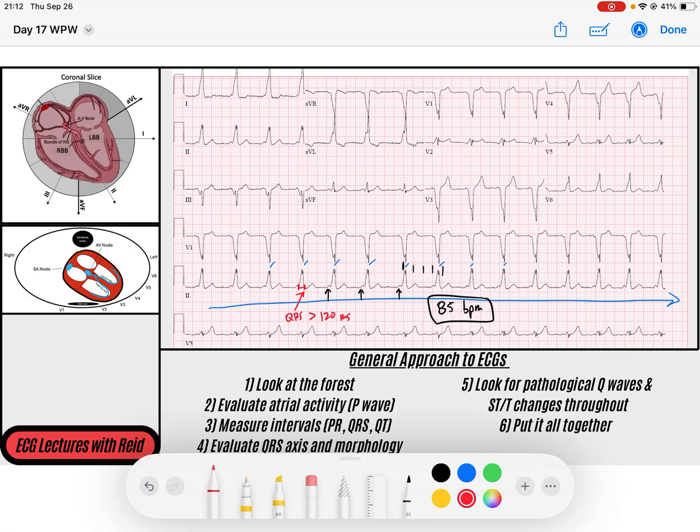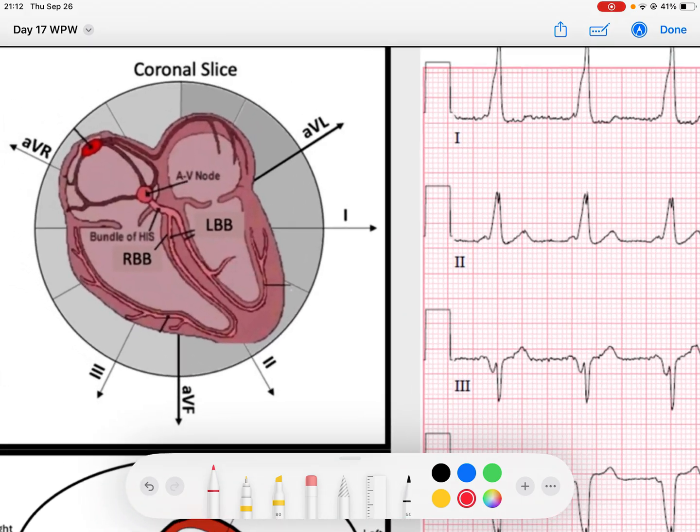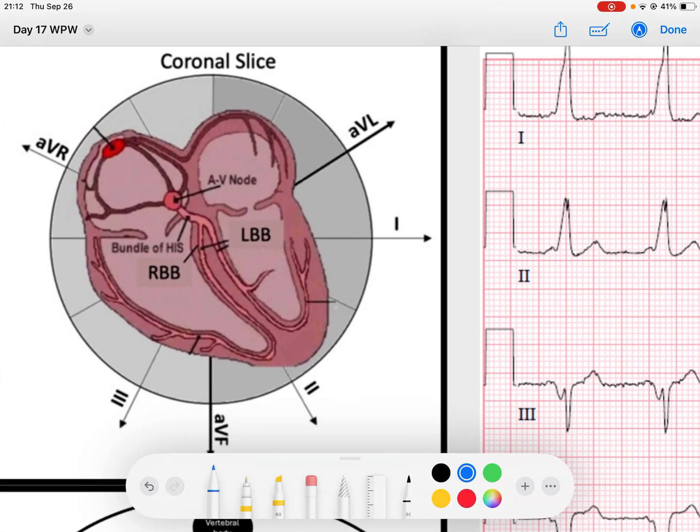And so before we really dive into the rest of this EKG, let's talk a little bit about what is happening in Wolf-Parkinson-White. So Wolf-Parkinson-White, named after these three physicians. But really, it's a disease that is caused by pre-excitation. And let's talk about that.